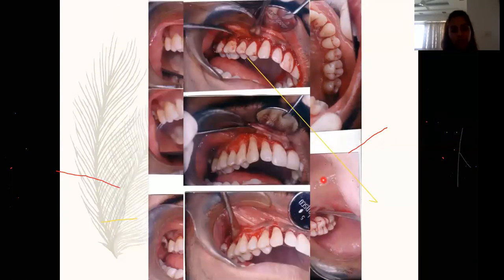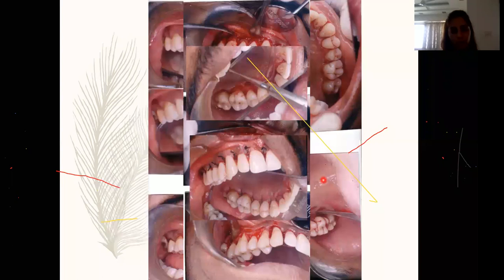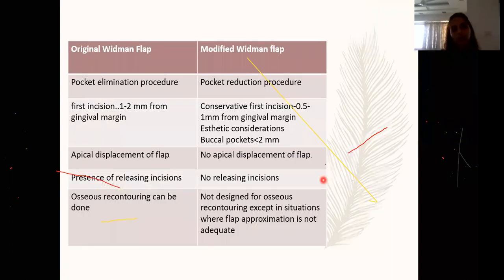This is the classic internal bevel followed by crevicular interdental debridement and suturing, which is why the modified Widman flap became a very popular flap that we still perform in practice.